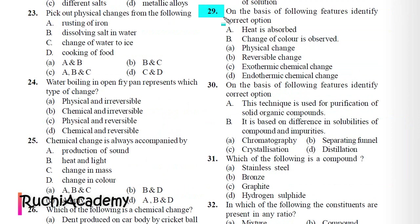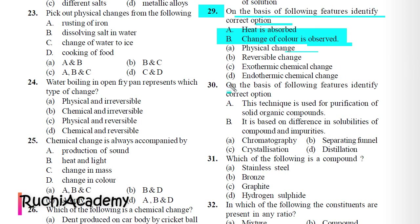Question 29: On the basis of the following features — heat is absorbed, change of color — identify the correct option: A) Physical change, B) Reversible change, C) Exothermic chemical change, D) Endothermic chemical change. Correct answer is D) Endothermic chemical change.